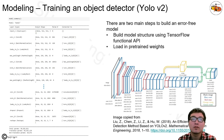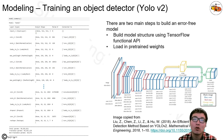There are two main steps you need to finish before the model is functional. First, you have to build the model structure using the TensorFlow functional API. Then you have to load pre-trained weights — YOLO's official website has those weights, but they need to be converted to a TensorFlow-compatible version.